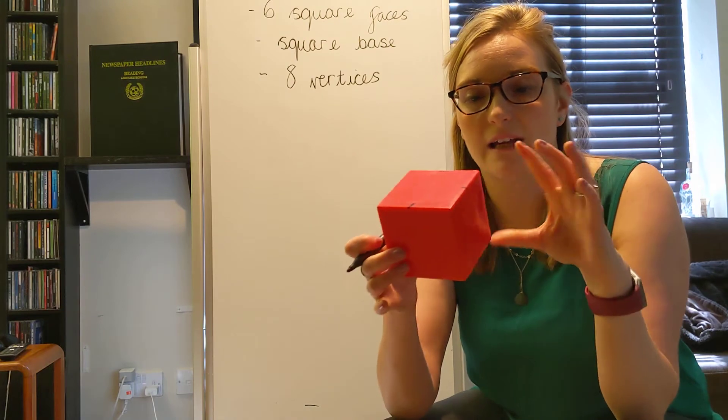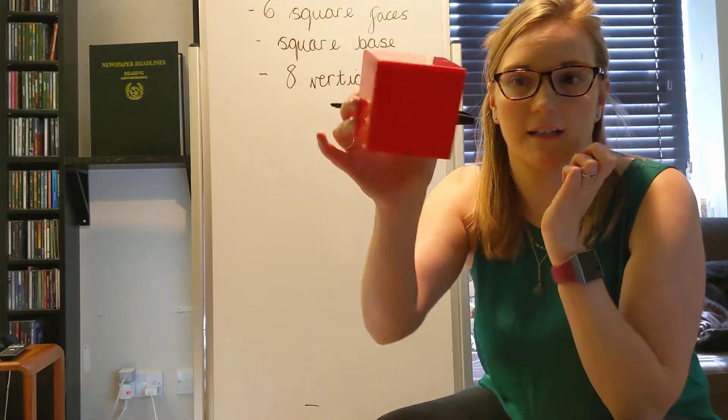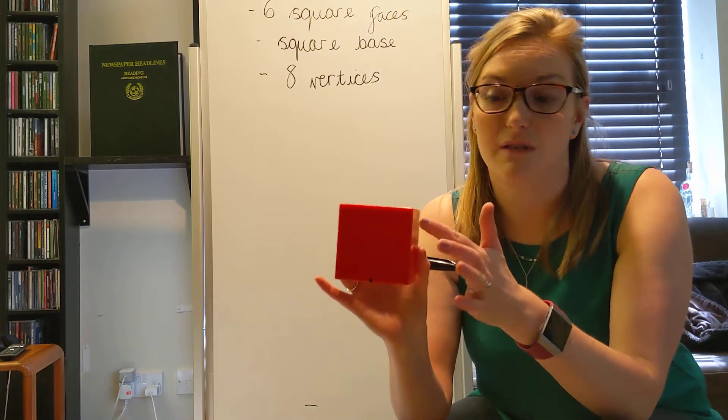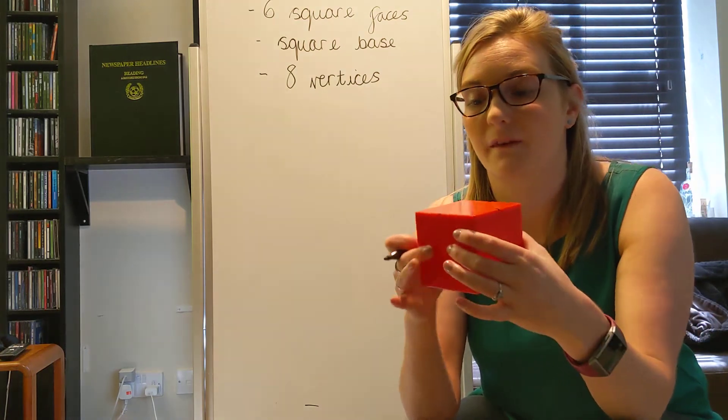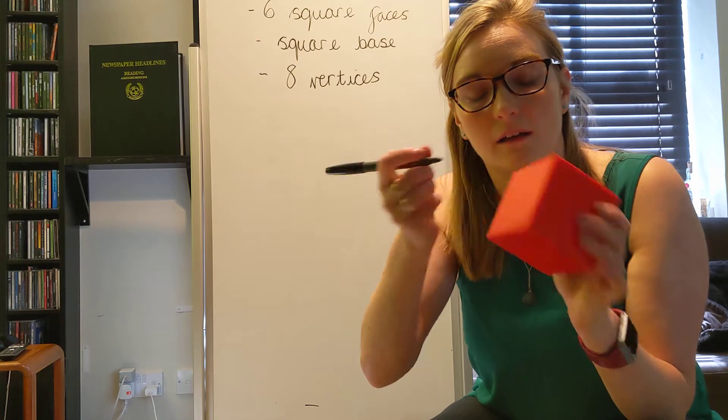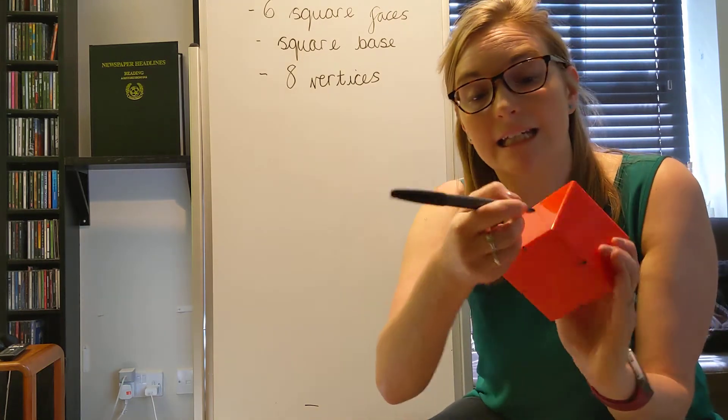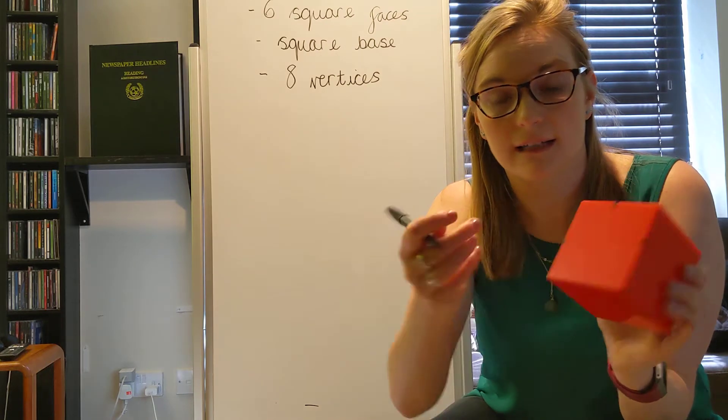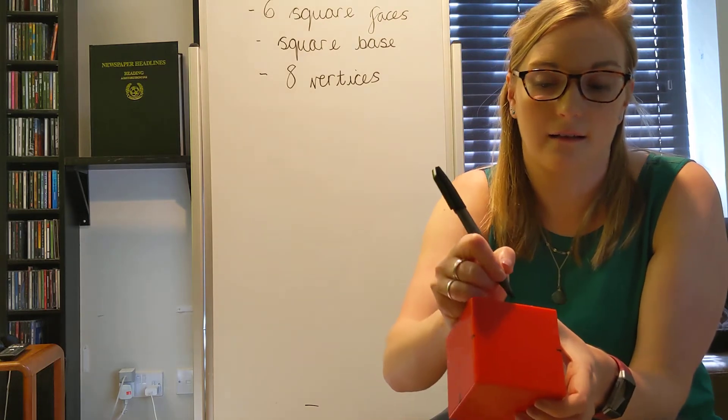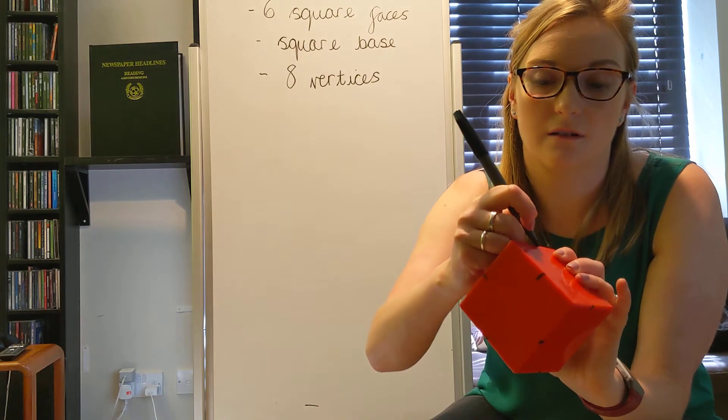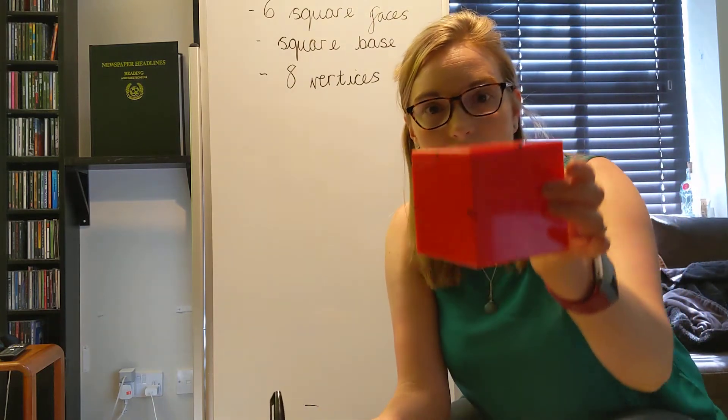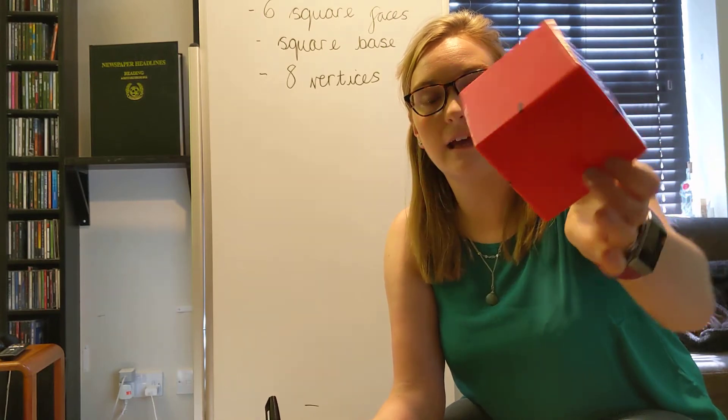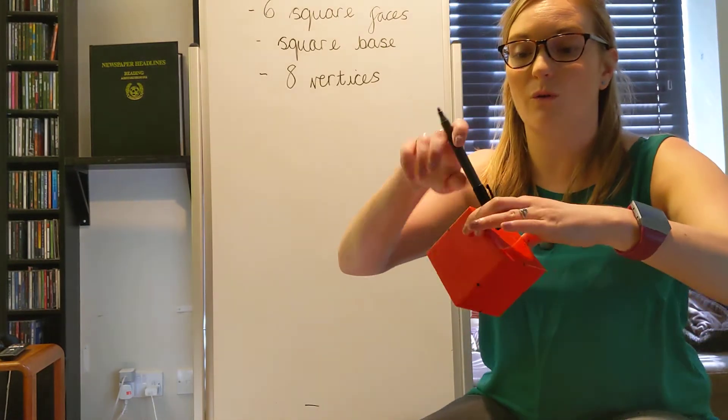Is that all the edges marked? Let's have a look. Well done. I've missed some. I've missed some down the side here. So let's go for this one here. So I had four there, four here. So that's eight, nine, ten, eleven, twelve. Let's have a look. Can we see any more edges that we need to count? Nope, but that's all the edges.